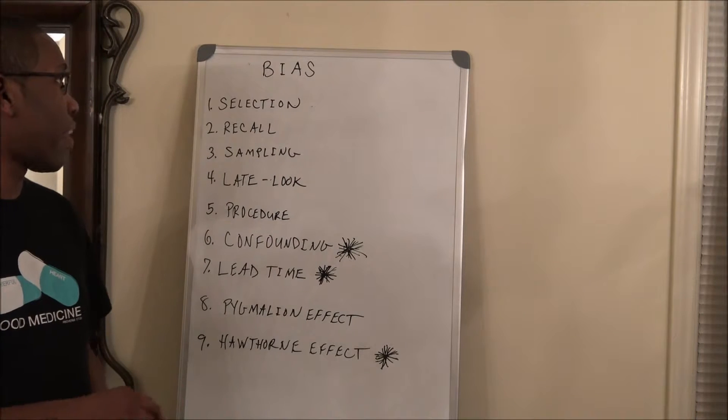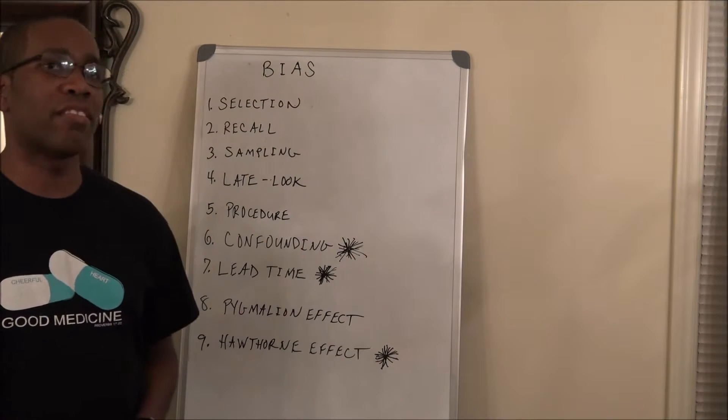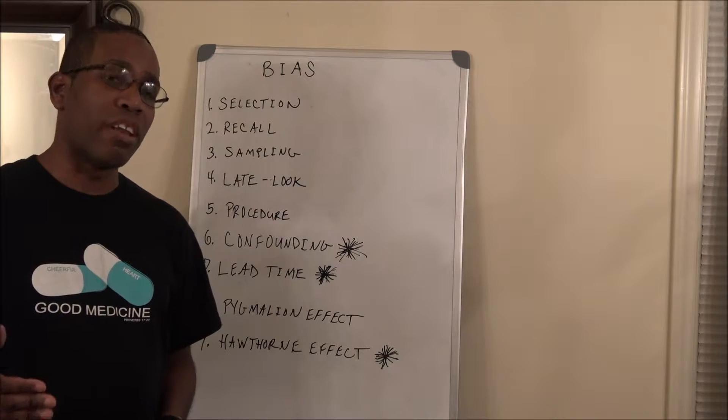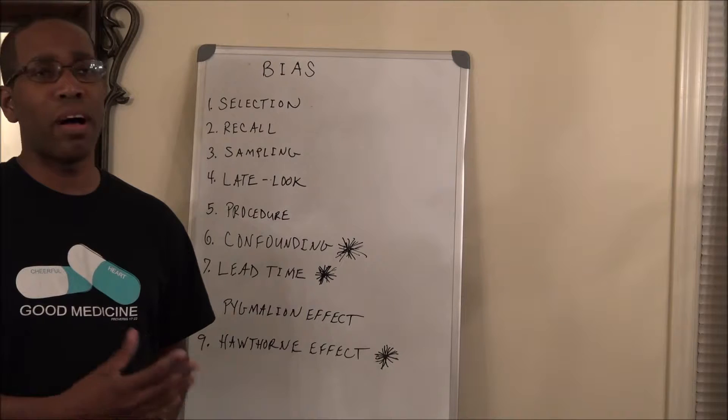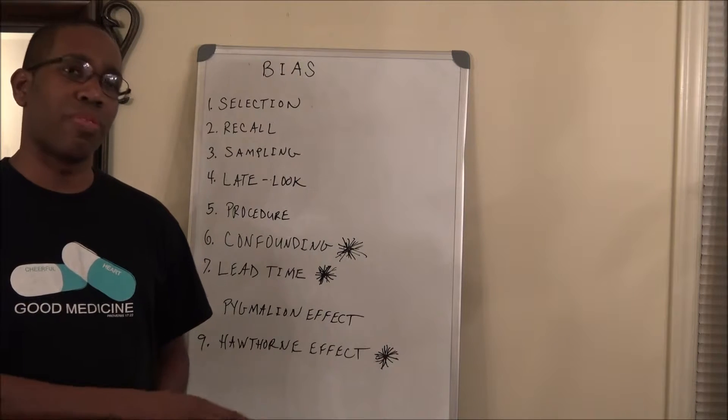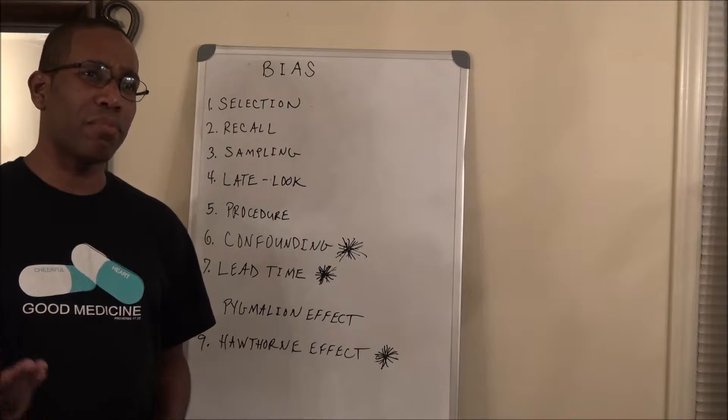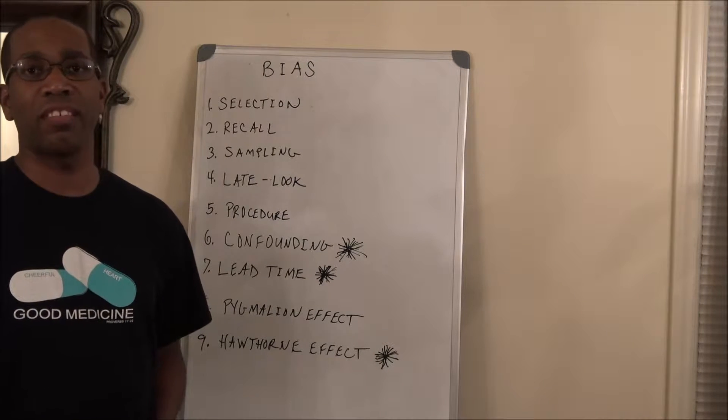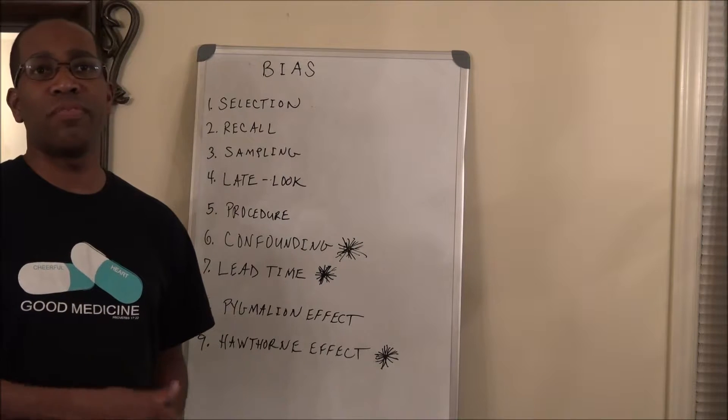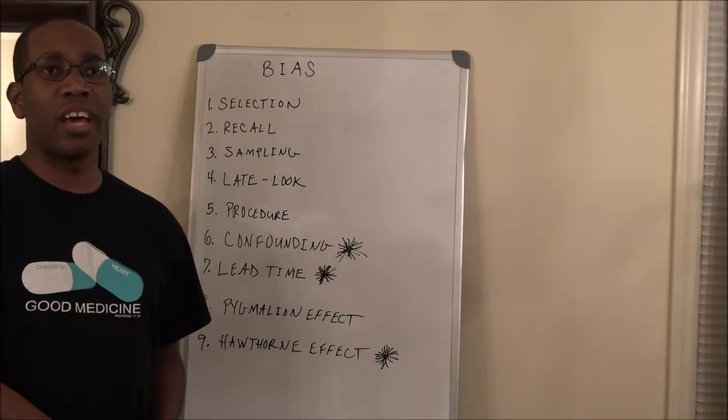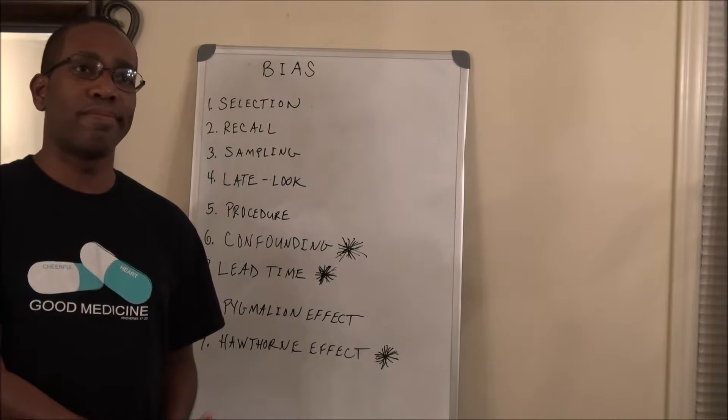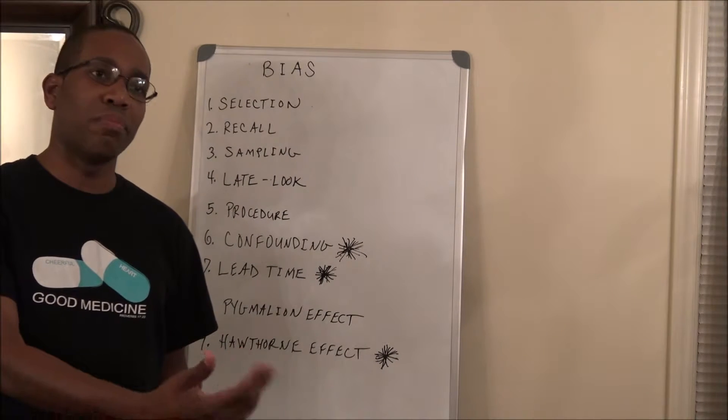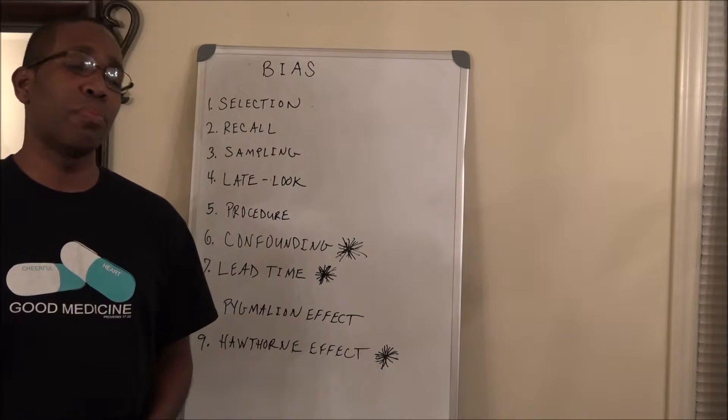The second type of bias is recall bias. Recall bias occurs when people are in a study and they're asked about certain factors or things in the past. A lot of times, let's say you pick individuals for the study who have disease X, and they're asked what they did—any kind of behavior, any kind of drugs they took, any kind of lifestyle, things that they had back in the past. The problem is,